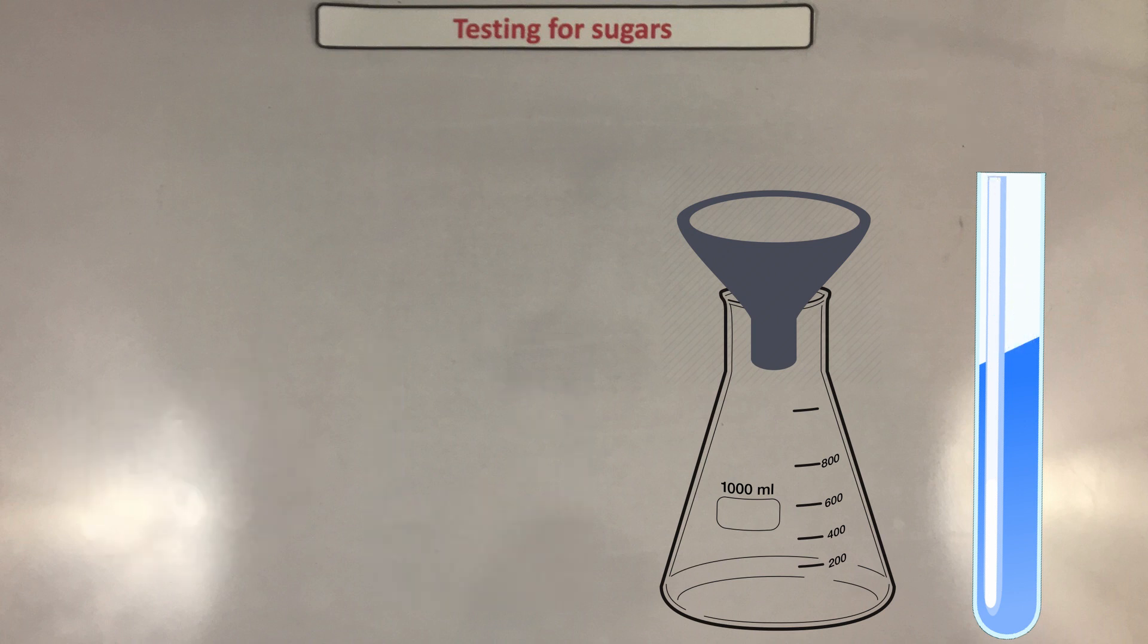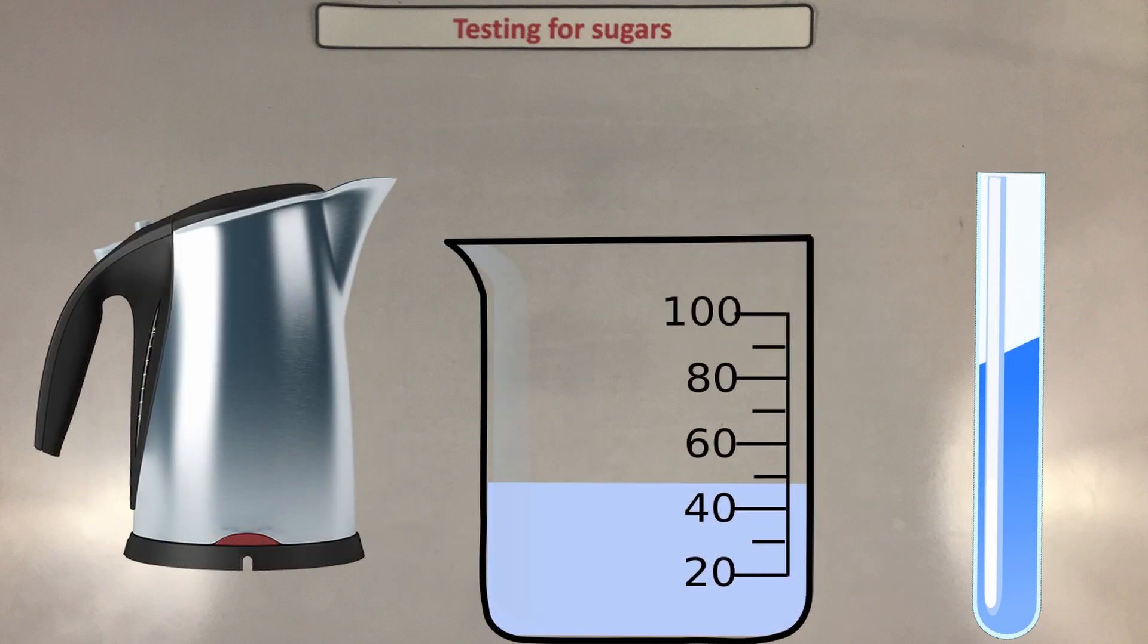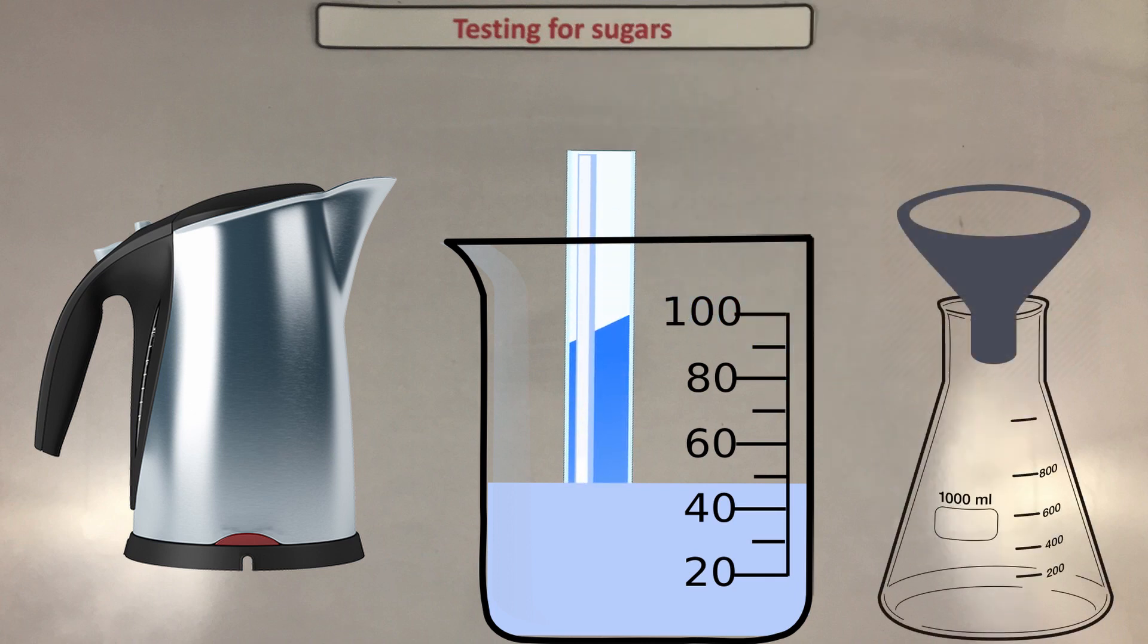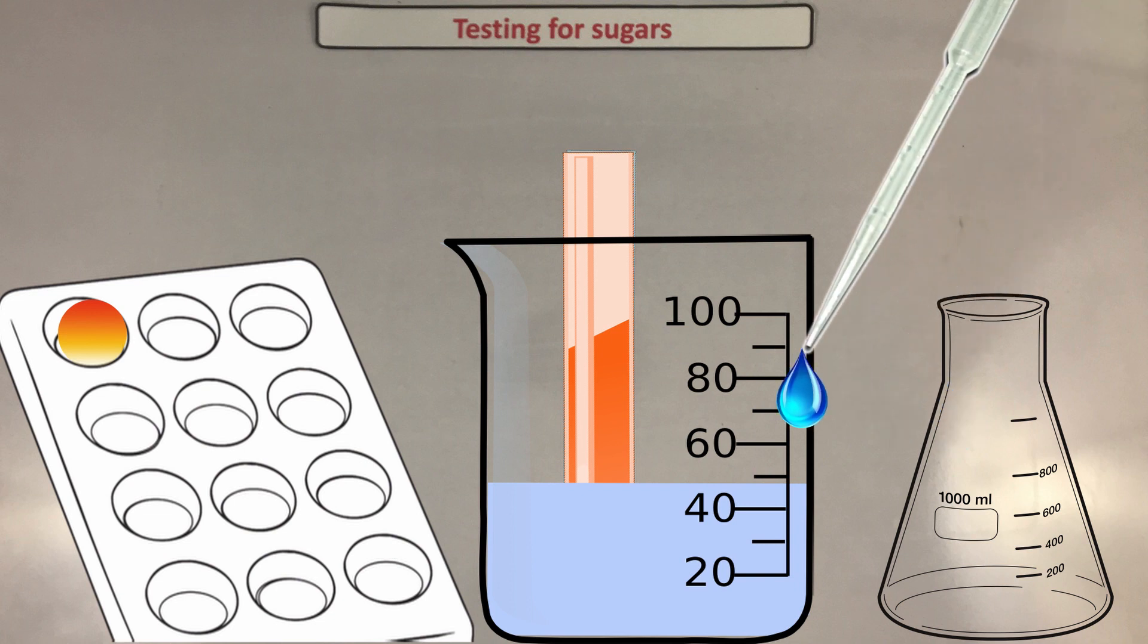Number five, you add some of your filtrate into a new test tube. Number six, you add ten drops of your Benedict solution to the test tube. Number seven, half fill a beaker with hot water from the kettle and leave it for five minutes. Number eight, if you have sugars then you would notice the color change. Take some of your filtrate left over and add it to some iodine - if it goes blackish purple then obviously you also had starch present in the food.